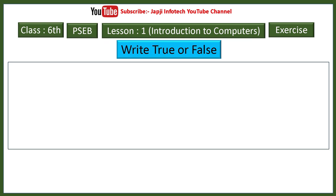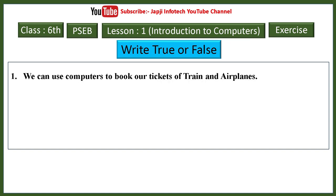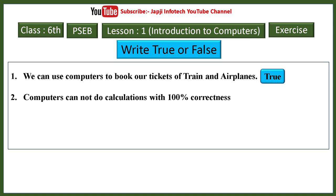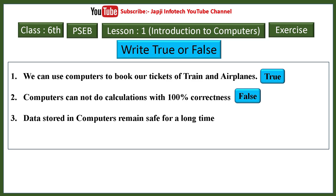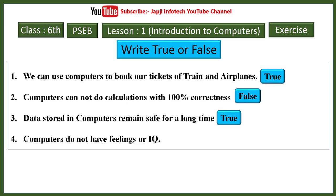Now we will learn about true or false. The first one: we can use computers to book our ticket for train and airplanes — true. Second: computer cannot do calculation with 100% correctness — false. Third: data stored in computer remains safe for a long time — true. Fourth: computers do not have feelings or IQ — true.